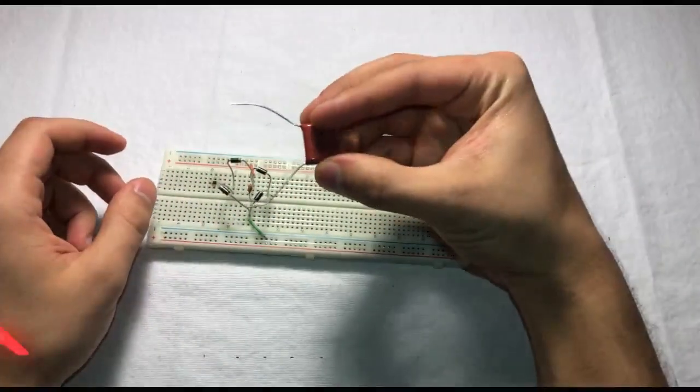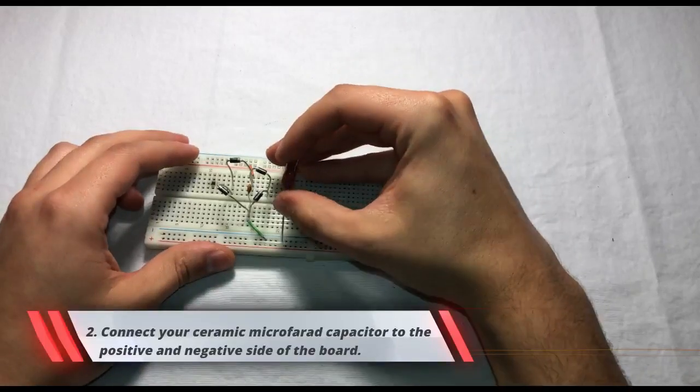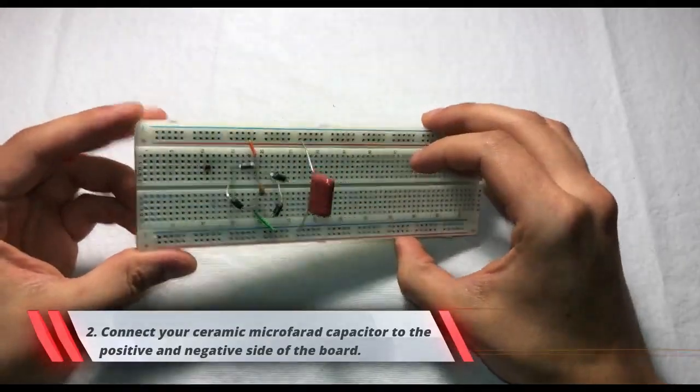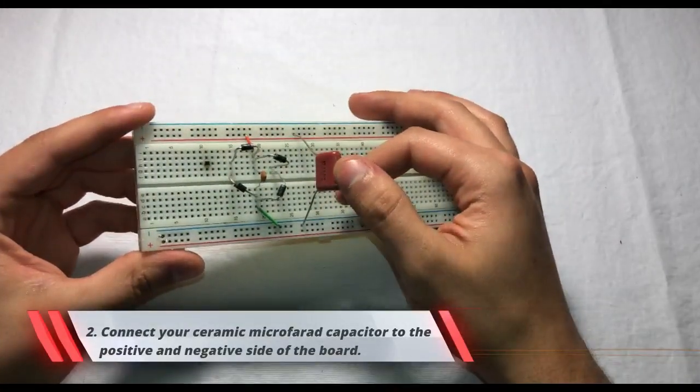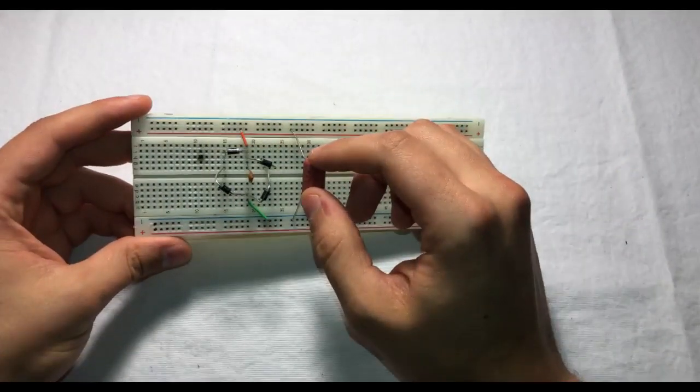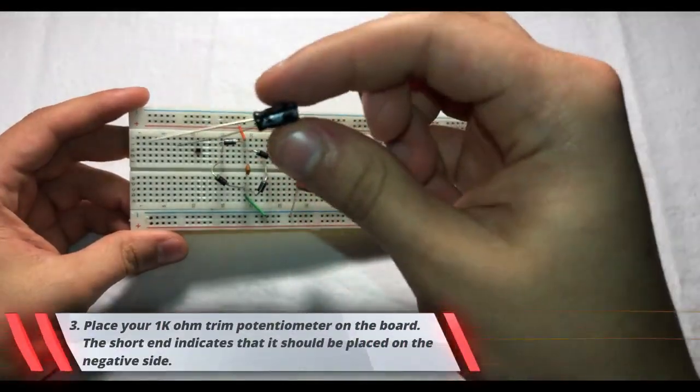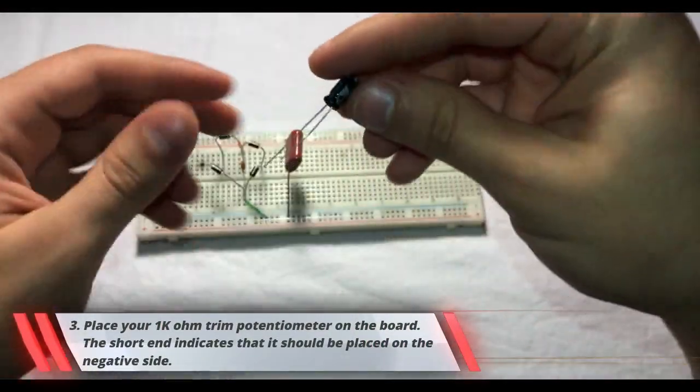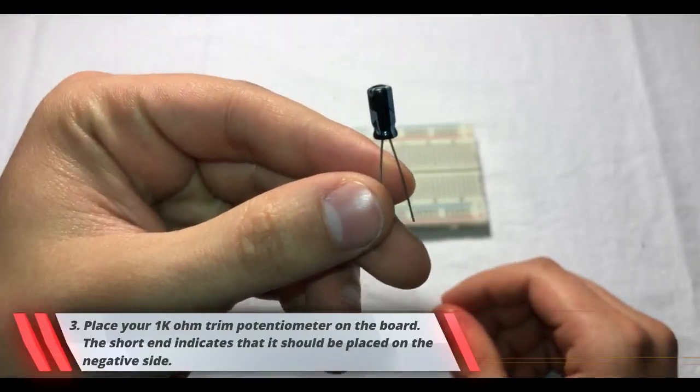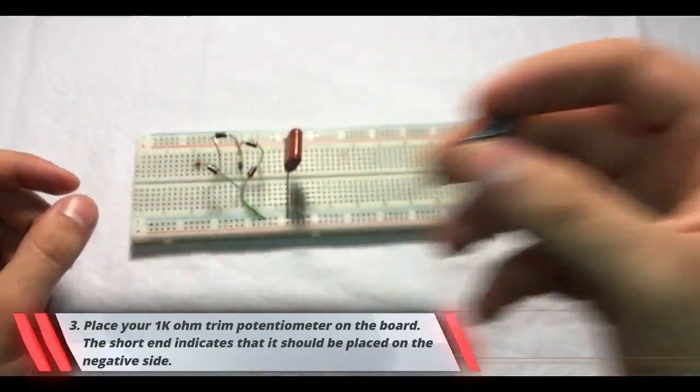So first we're going to start off by connecting our one microfarad capacitor. One side to the positive rail and one side to the negative rail. And it doesn't matter for this build because I'm using a ceramic capacitor which side the positive and negative are on. But if you're using an electrolytic capacitor like this one then you're going to want to make sure that you're connecting it the right way. And as you can see the short end is where the negative goes. So don't mix that up because you're going to have some bad smelling gases coming out of this.